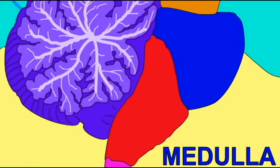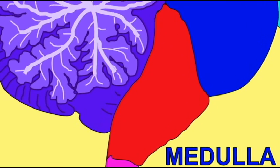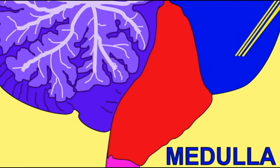The medulla oblongata is located at the base of the brain where the spinal cord enters the foramen magnum.